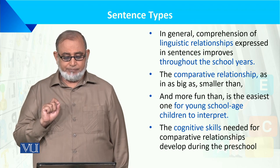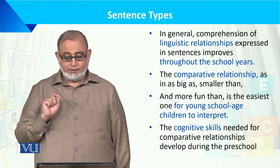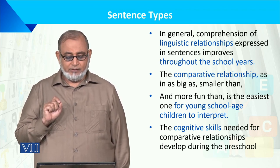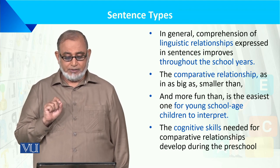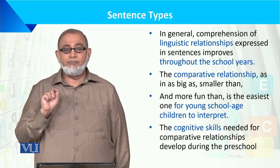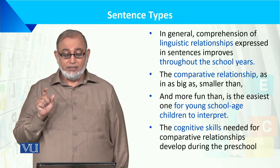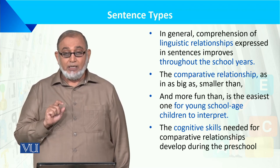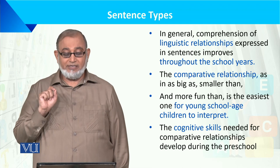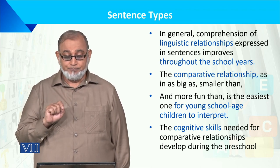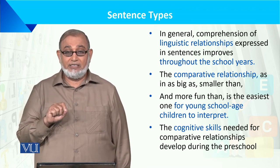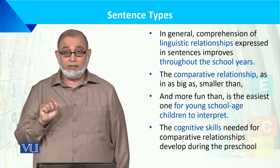The comparative relationship — as in 'as big as,' 'smaller than,' and 'more fun than' — is the easiest one for young school-age children to interpret. With little children, it's difficult for them to interpret. This means the adjective comparison is used, and children's cognitive skills development is required for comparative relationships development during preschool years. By school years, they have developed cognitive skills.